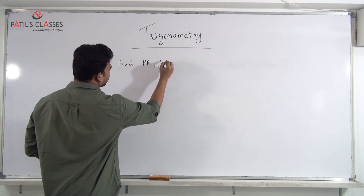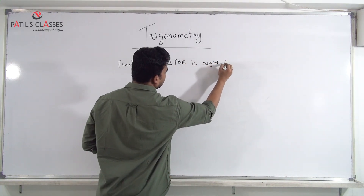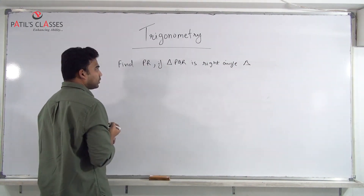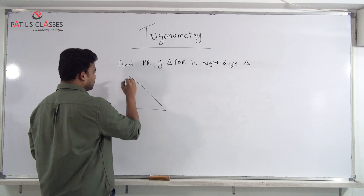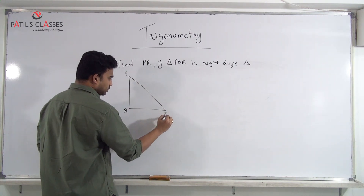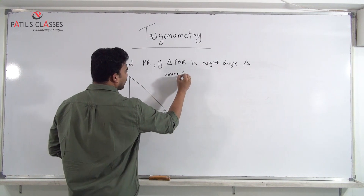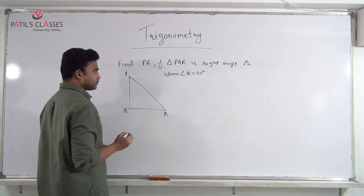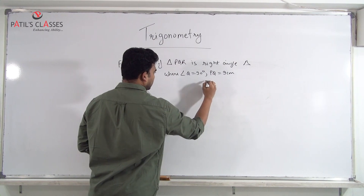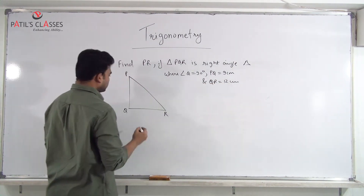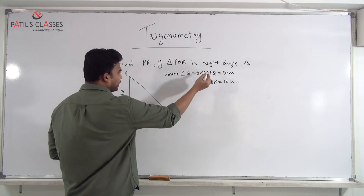Find PR if triangle PQR is a right angle triangle where angle Q = 90°, PQ = 9 cm, and QR = 12 cm. PQ is 9, QR is 12 — a very simple question. Let us calculate PR.